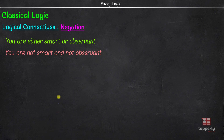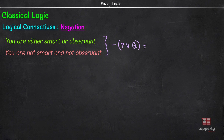Have you noticed how the OR has changed to AND in negation? So, in general, if you have two propositions P and Q, then the negation of P disjunction Q is negation of P conjunction negation of Q.